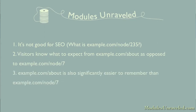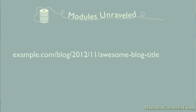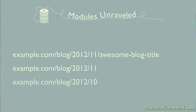example.com/about is also significantly easier to remember than example.com/node/7, and it'll also make it possible for URL hackers to find content they want. For example, if you have a blog and the URL includes the year and month of the post — example.com/blog/2012/11/awesome-blog-title — some users will delete the title to see what else you posted in November of 2012. They may even try to check out what you posted in October by replacing the 11 with 10.